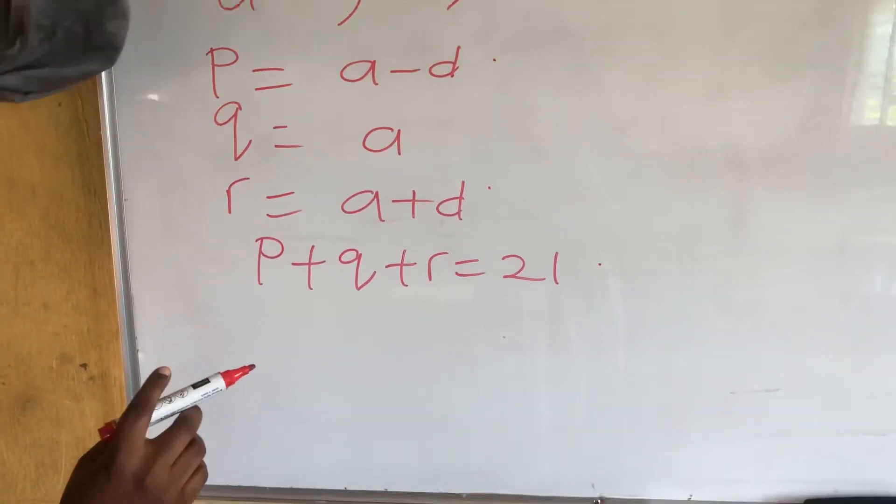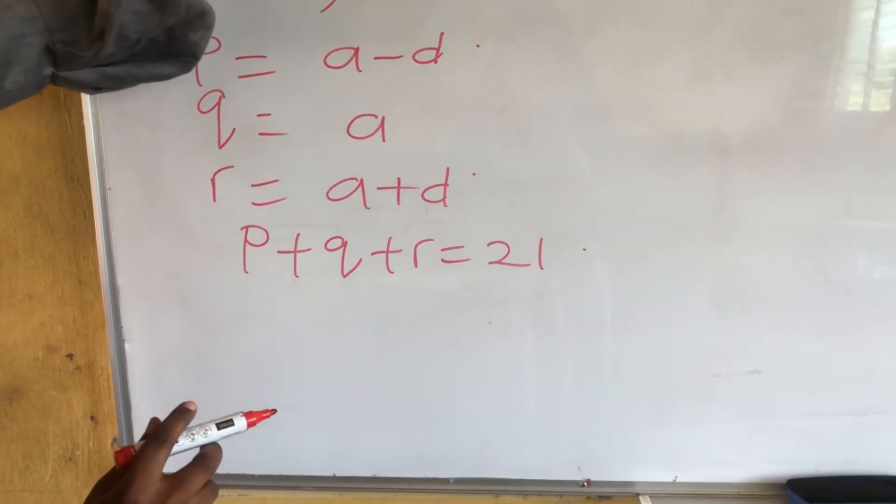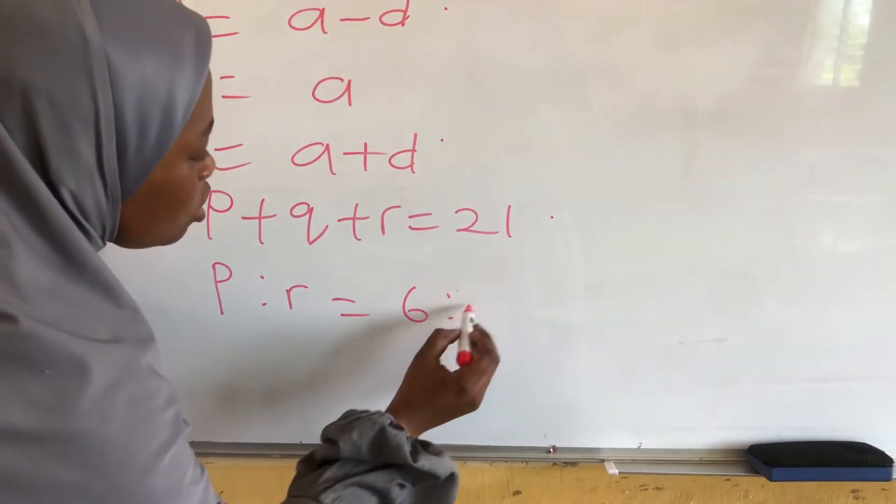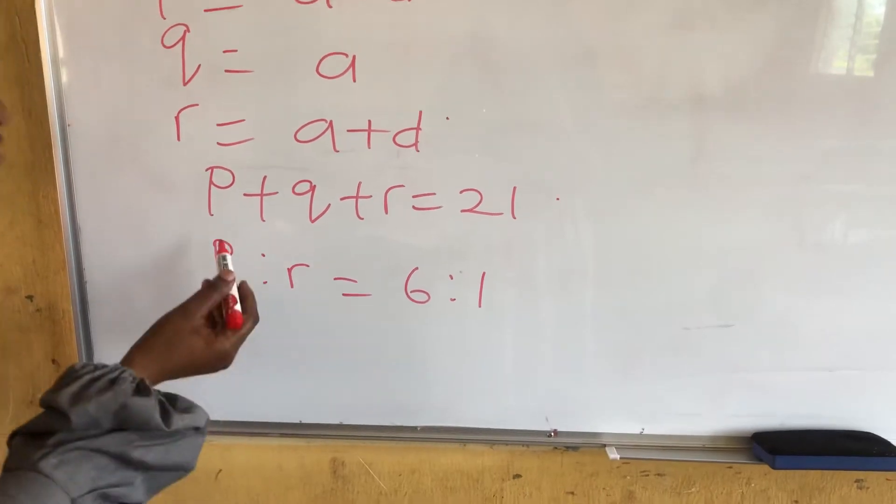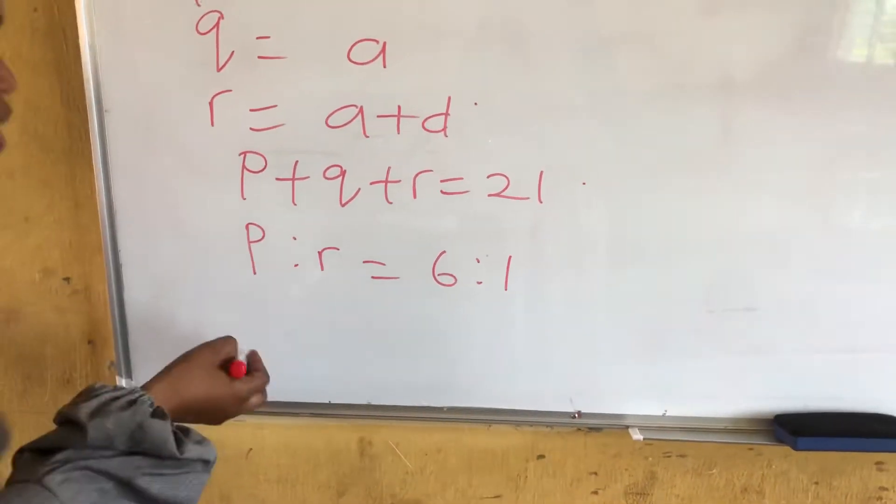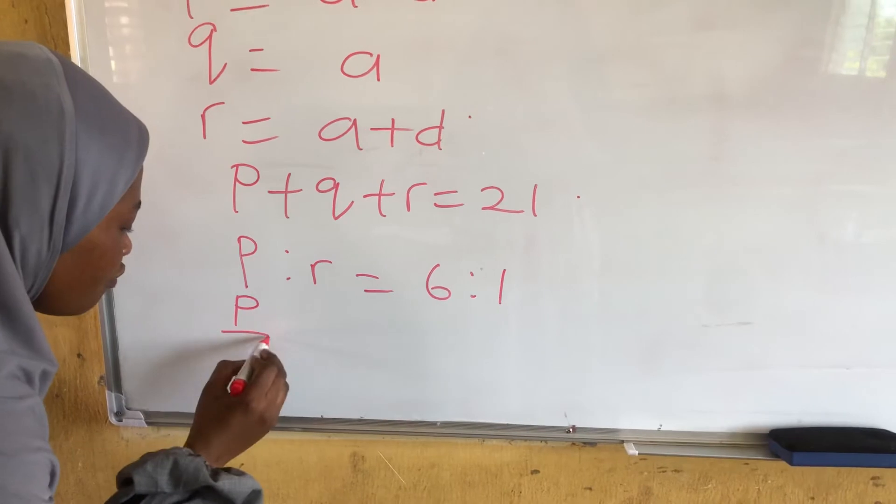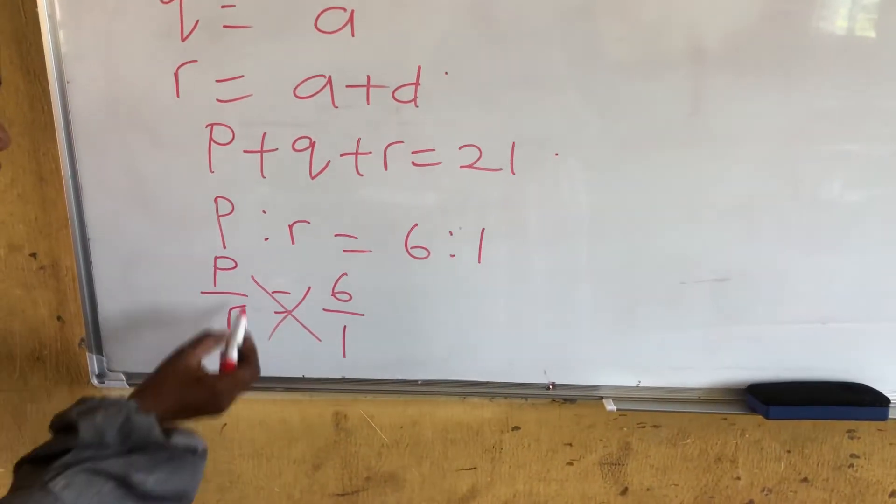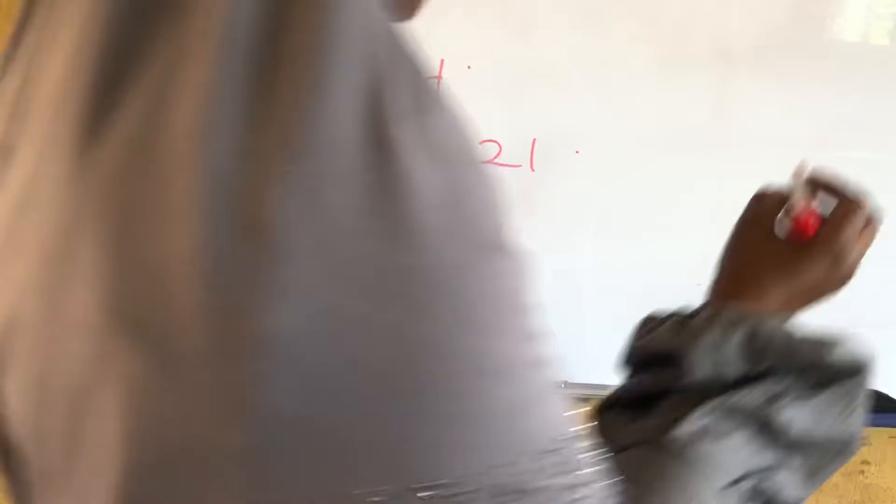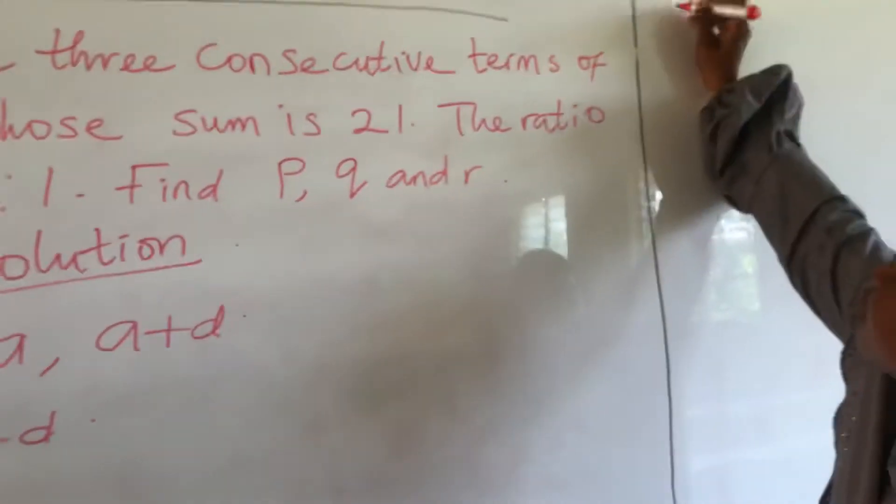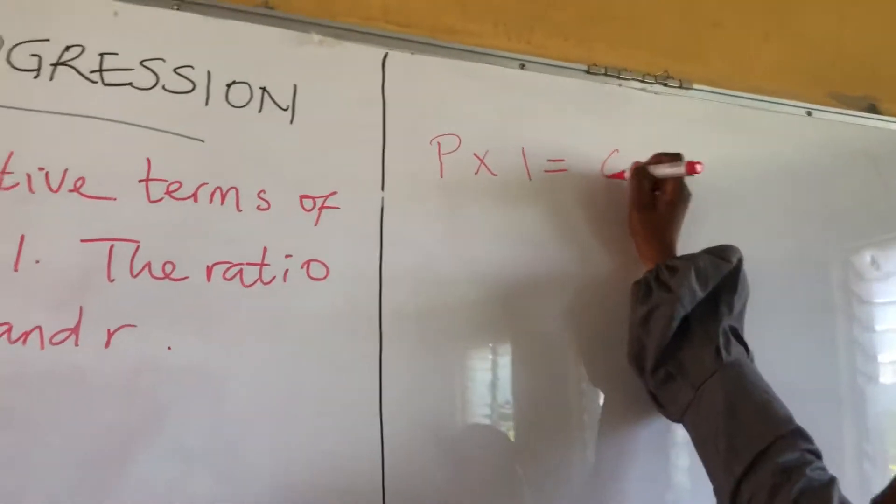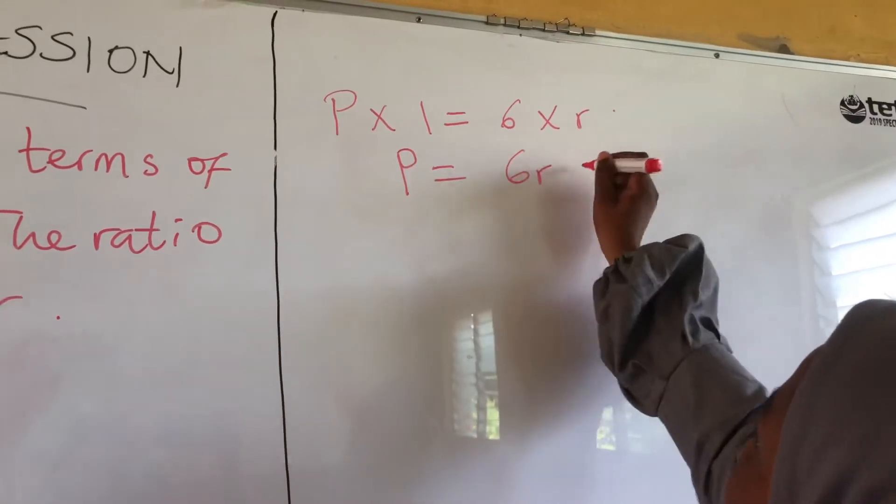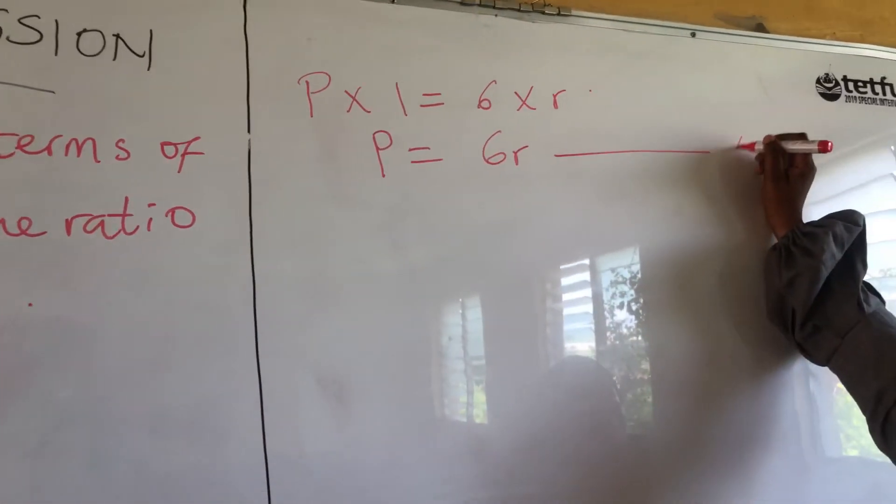The ratio P:R is equal to 6:1. So, from here, ratio is the same thing as fraction, or we say division. P over R is equal to 6 over 1. So, we can now cross multiply. P multiplied by 1 is equal to 6R. Meaning that P is equal to 6R. So, you can label this one equation star.